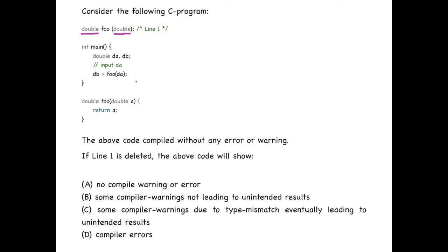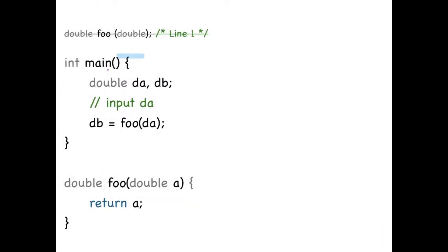So let's analyze this program line by line. The first line is simply declaration of two variables, so there's no problem in this. Second line is also OK.